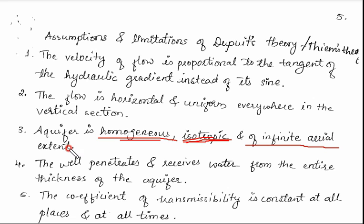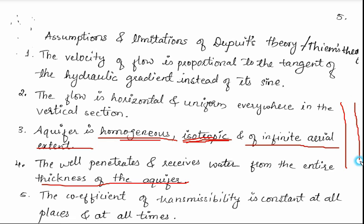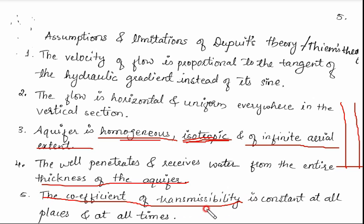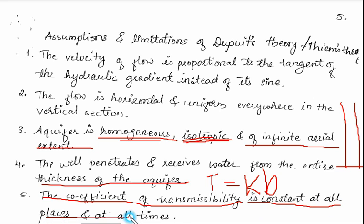The fourth assumption is that the well penetrates and receives water from the entire thickness of the aquifer — the well penetrates completely into the aquifer. The next assumption is that the coefficient of transmissibility is constant at all places and at all times. The coefficient of transmissibility T is equal to k times b, and this value remains constant throughout.